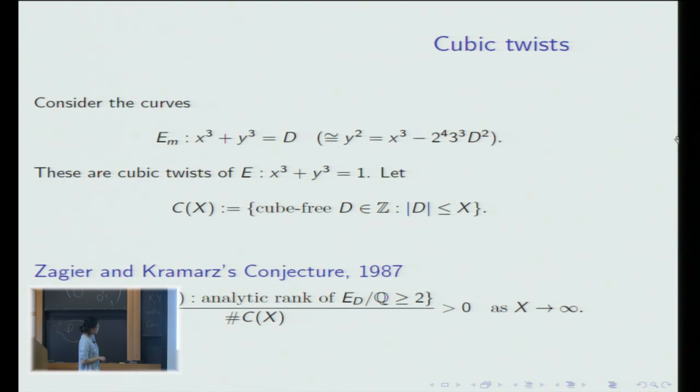Then in 1987 Zagier and Kramarz conjectured that the analytic rank of cubic twists is greater than 2. So if it is true, then it would be a significant difference between the behavior of quadratic twists and cubic twists.